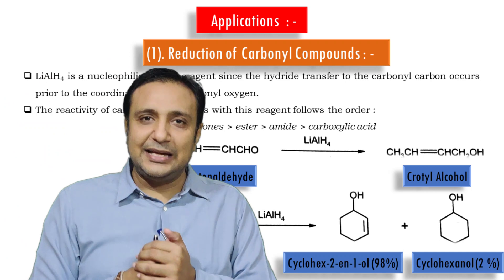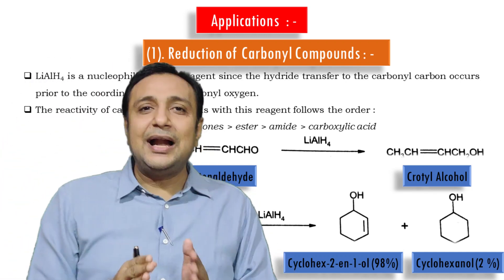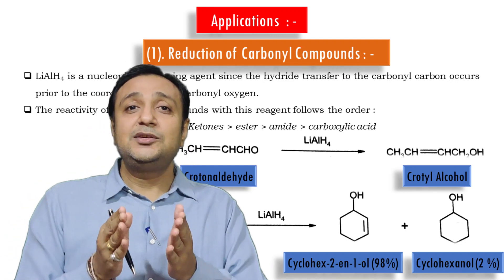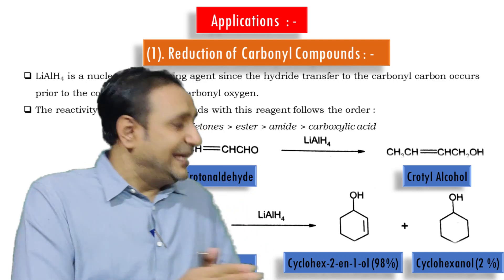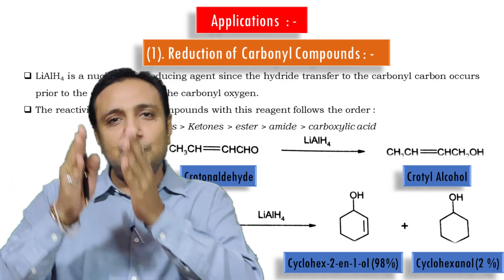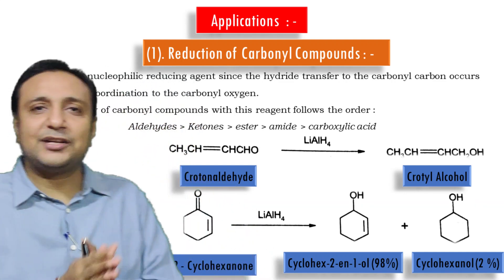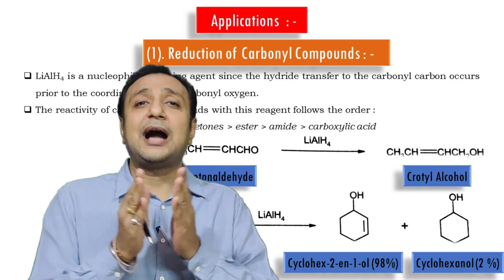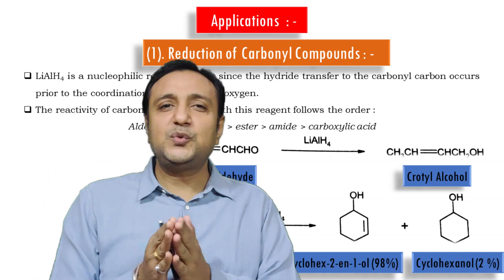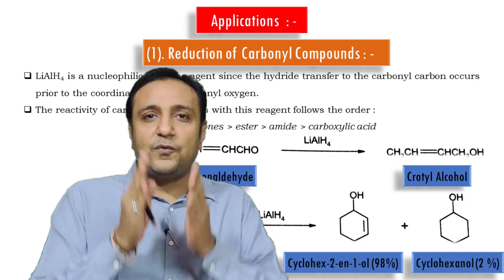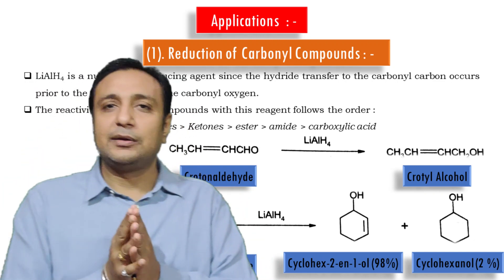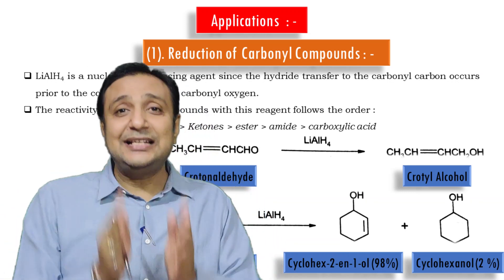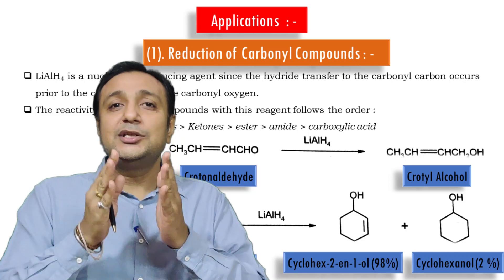In the first example, crotonaldehyde undergoes reduction with lithium aluminium hydride followed by hydrolysis, converting the CHO group to CH2OH to produce crotyl alcohol. In the second example, 2-cyclohexanone undergoes reduction with LAH followed by hydrolysis, producing two products: cyclohex-2-en-1-ol (98%) and cyclohexanol (2%).